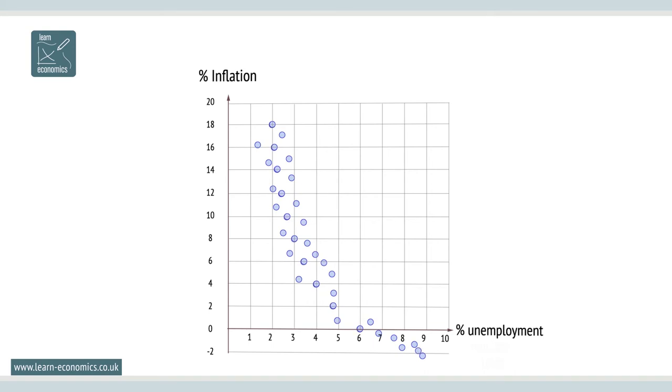Graphically, each dot represents a year of data, with the Phillips Curve the line of best fit for the data. So, what did the Phillips Curve show?